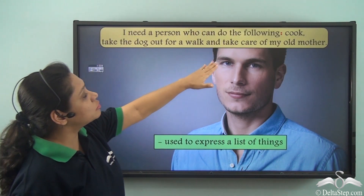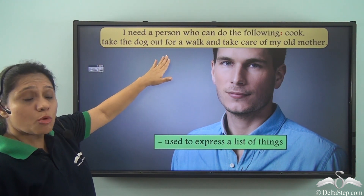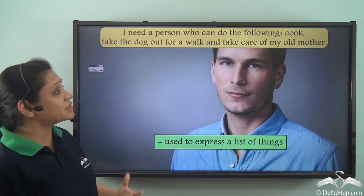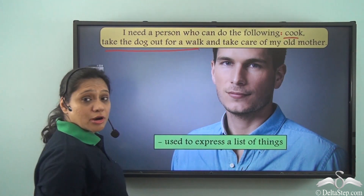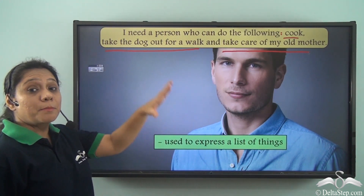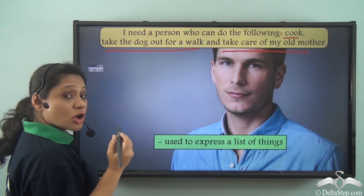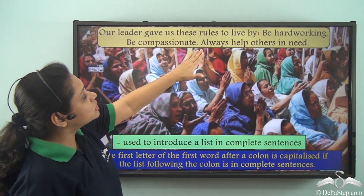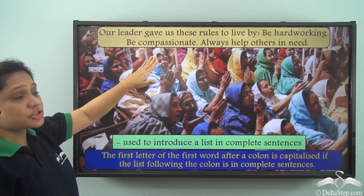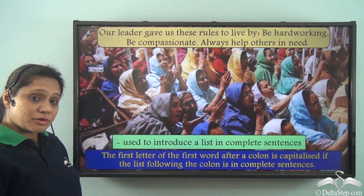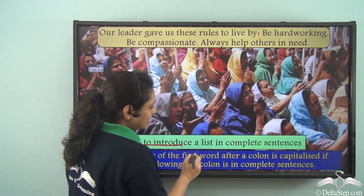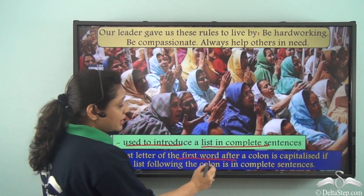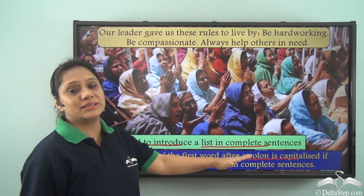Consider: 'I need a person who can do the following: cook, take the dog out for a walk and take care of my old mother.' Here the colon introduces a list of phrases. Colons can also introduce lists in complete sentences, as in: 'Our leader gave us these rules to live by: Be hard working, be compassionate, always help others in need.' The first letter after the colon is capitalized when the list consists of complete sentences.